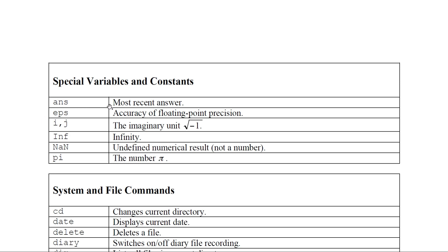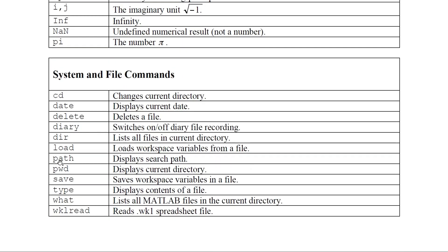Special variables: ans stores the most recent answer — if you simply type 1+1, ans becomes 2. eps is the floating-point precision. i and j represent the imaginary unit. Inf indicates infinity. NaN means Not a Number — an undefined numerical result. pi holds the mathematical value of π.